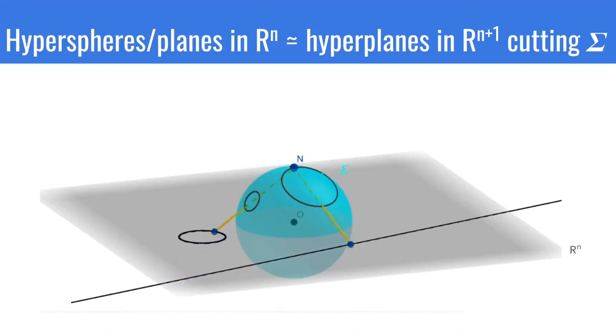The interesting thing is that under stereographic projection, hyperspheres/hyperplanes of R^n are imaged to intersections of hyperplanes in R^{n+1} with sigma. In other words, hyperspheres/hyperplanes of R^n are in one-to-one correspondence with hyperplanes of R^{n+1} cutting sigma.